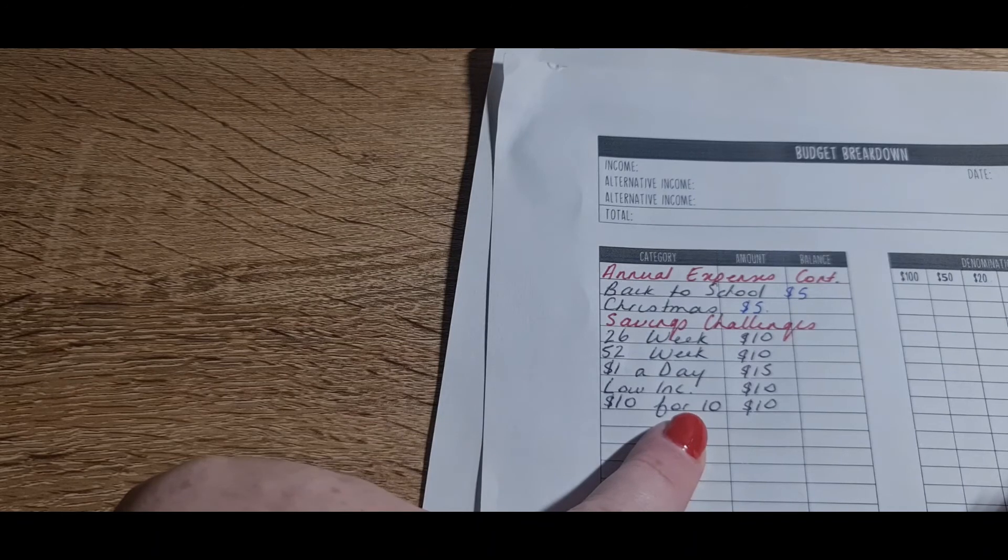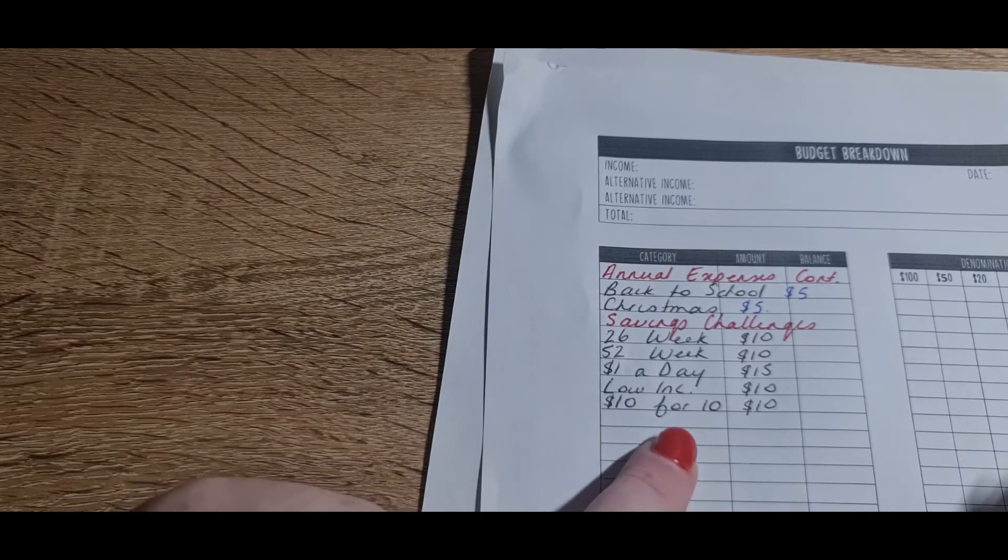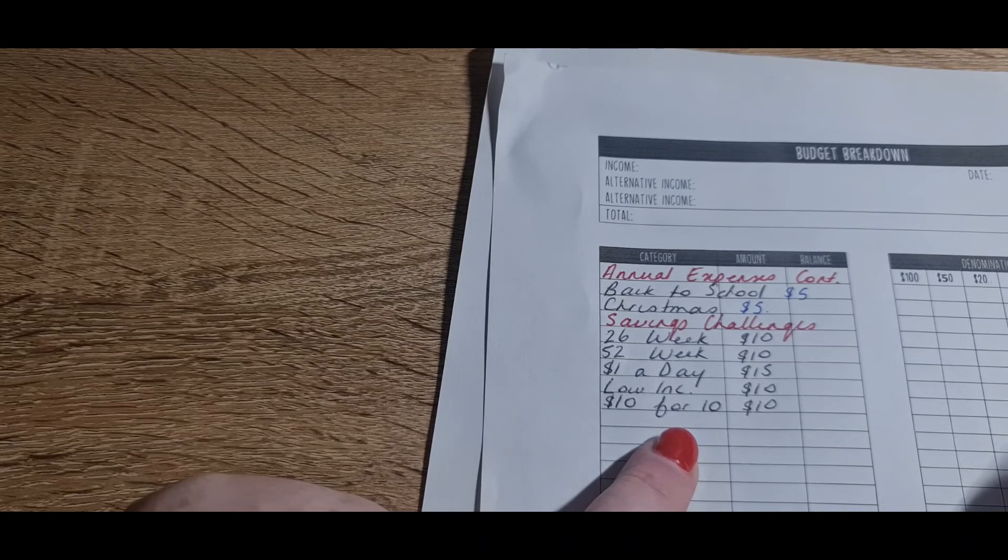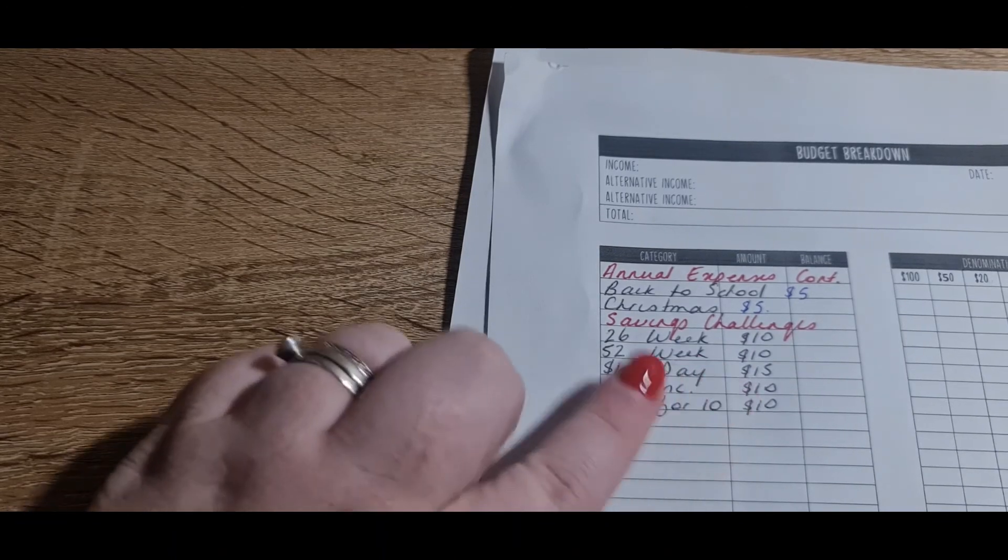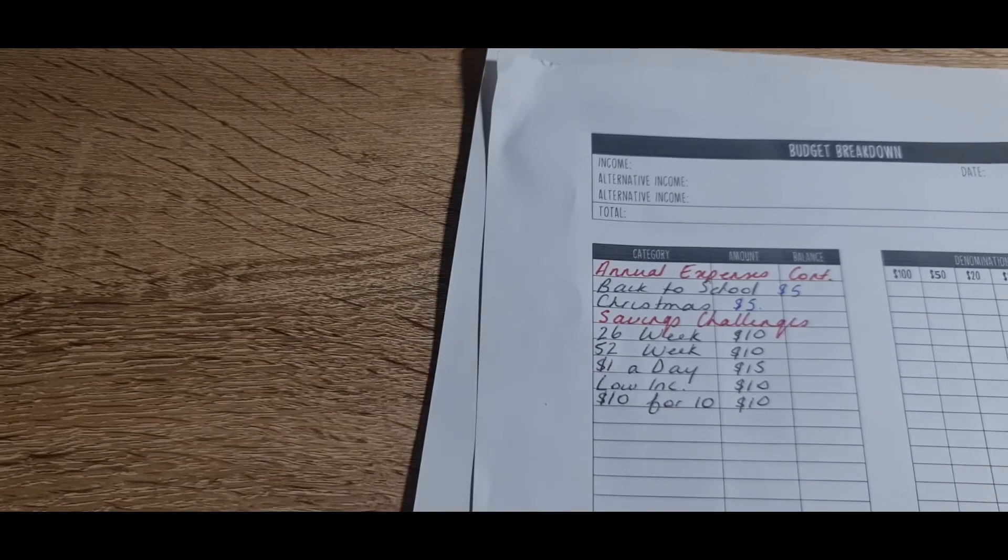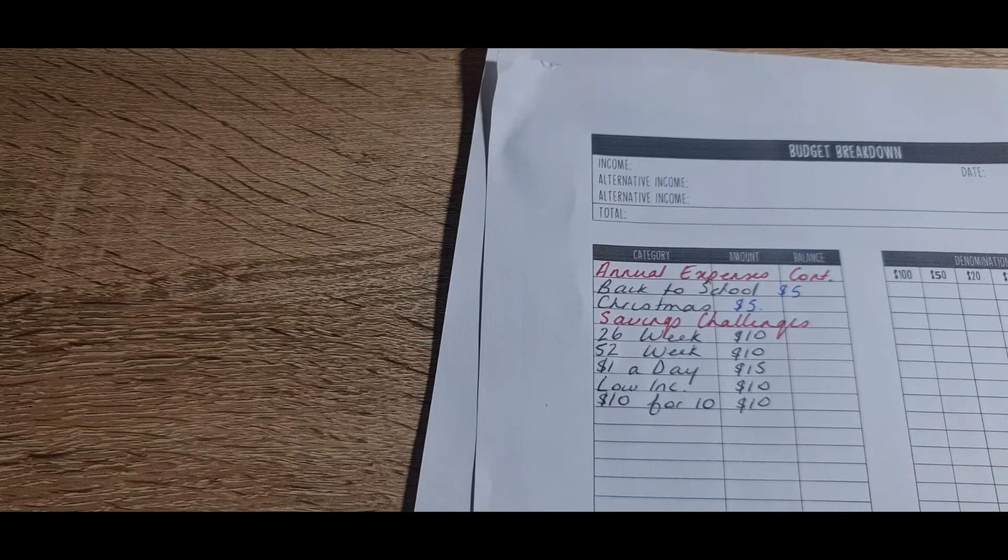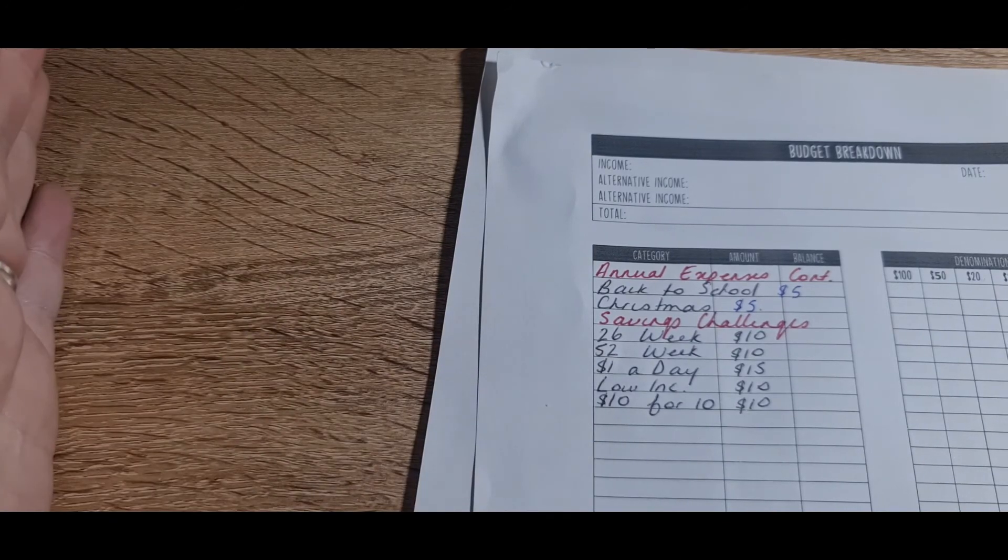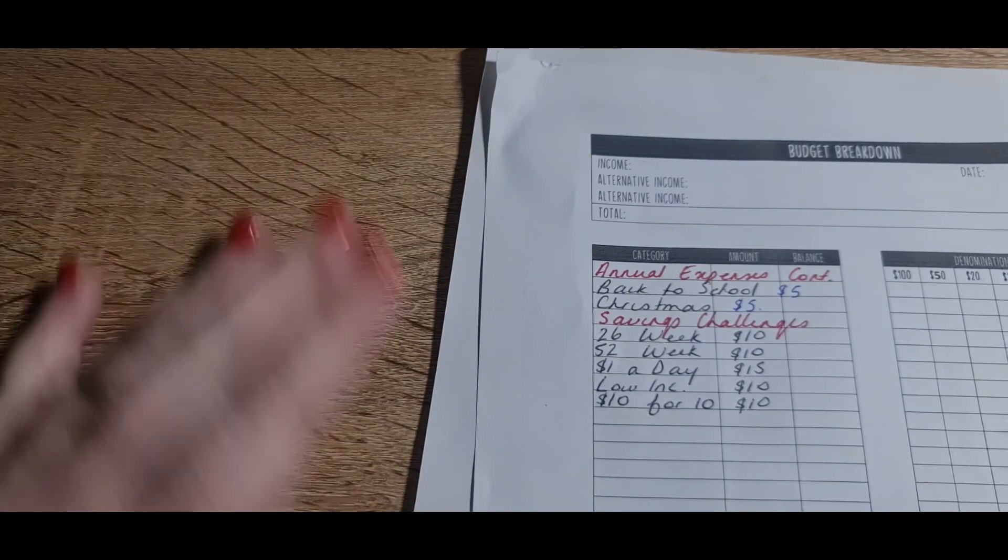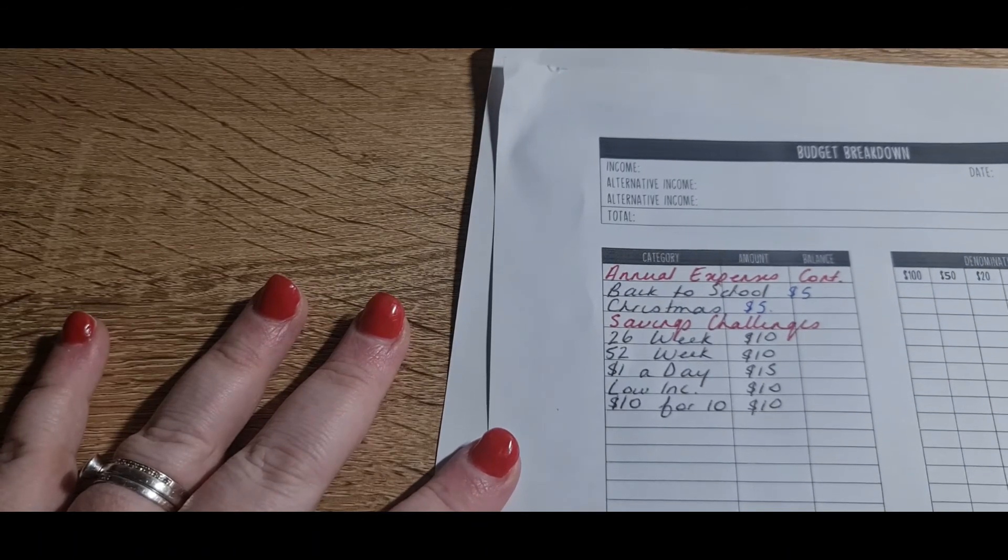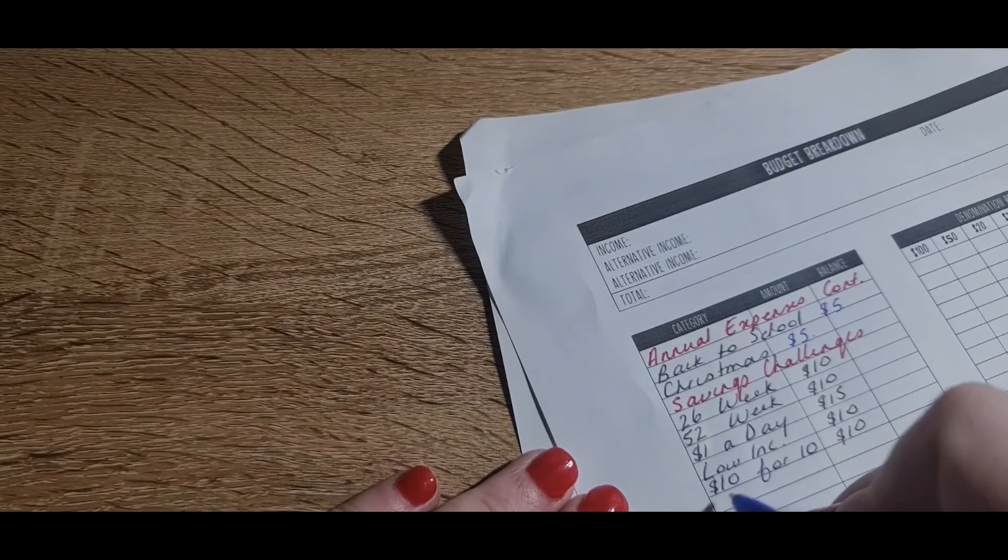The low income is getting $5. The ten for ten is getting a $10. And I've actually made a bit of a change. I recently completed my five for five, which is $5 in five envelopes, which totals $25. I completed that. I'm going to re-empty those envelopes and restart it, and I'm just going to keep redoing that.